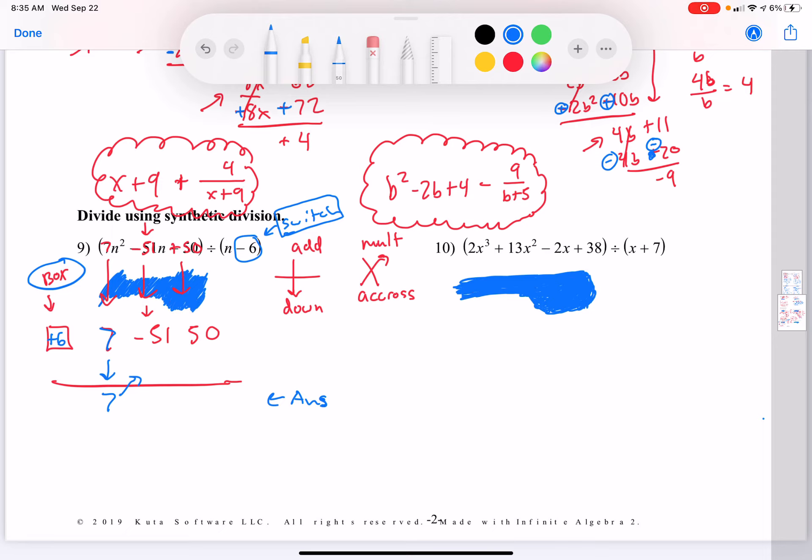So 7 times 6 is 42. And then I'm going to add these two. These two are going straight down, so we're adding down. So add negative 51 plus 42, which is negative 9.